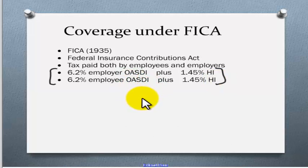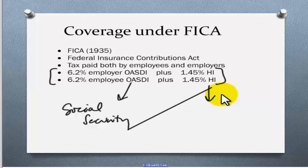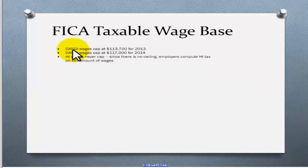OASDI stands for Old Age and Survivors Disability Insurance, what you've probably seen called more familiarly as Social Security. And HI stands for Hospital Insurance, or what we familiarly call Medicare. Again, OASDI rates are 6.2% for both the employee and the employer. In 2013, the amount of wages that was taxable for OASDI was $113,700.